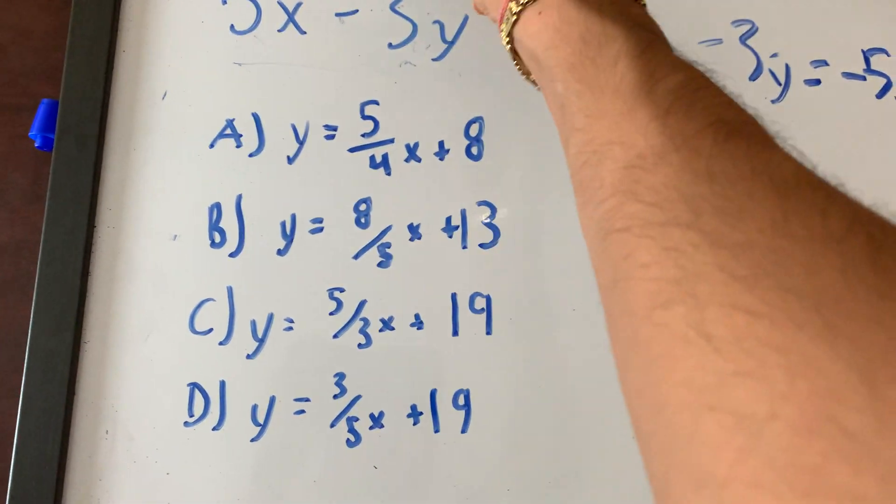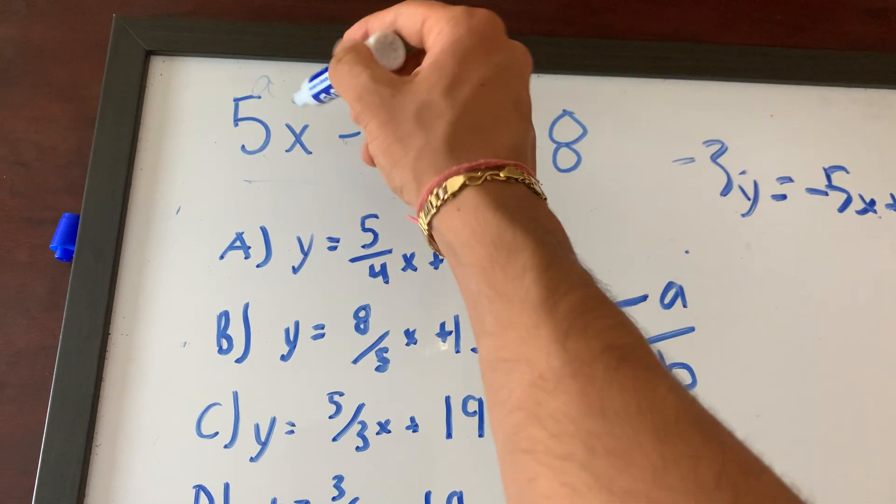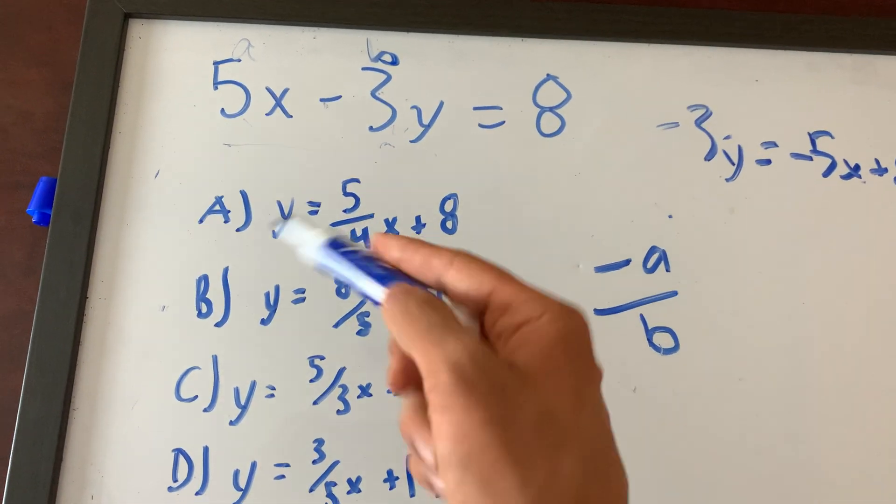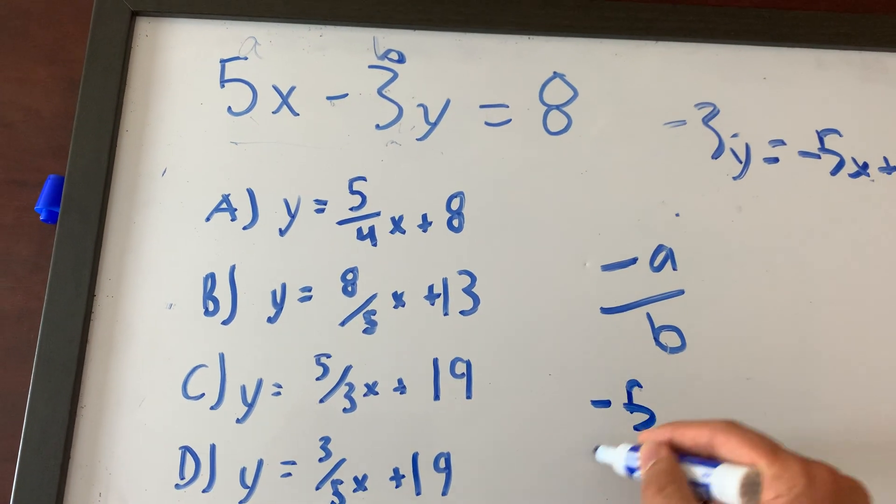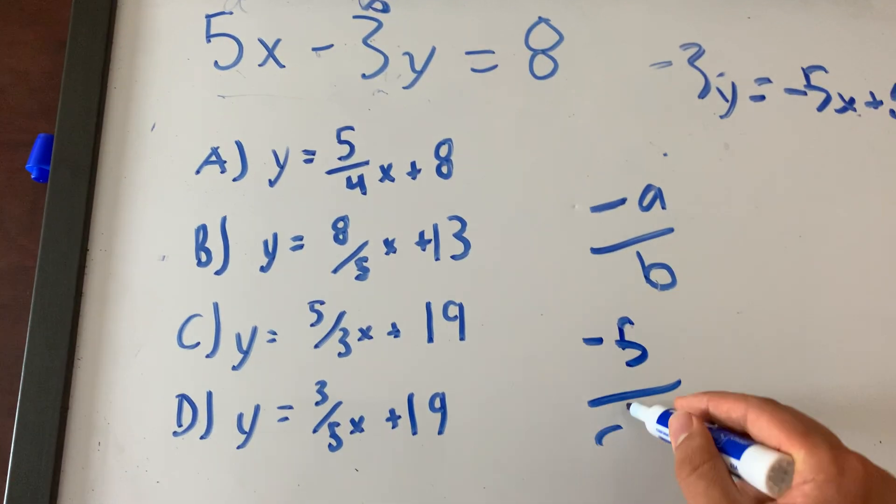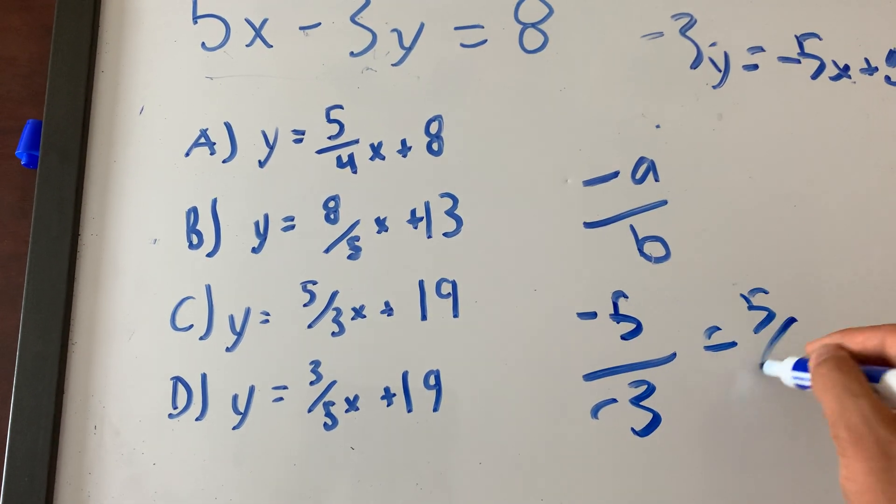5 is a, so this is a, this is b. Oh, there you go. That's a, that's b. So what's negative a? Negative 5. What's b? Negative 3. Alright. Slope is 5 over 3. Done.